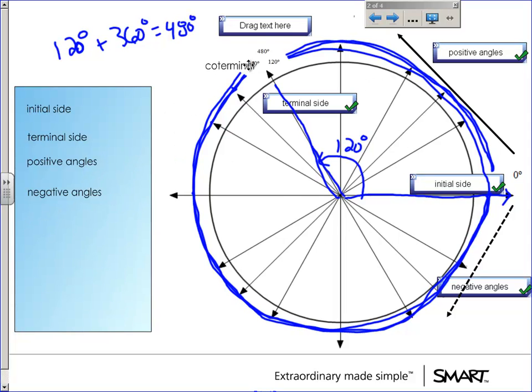So if an angle ends up in the same place but with different names, we're going to call that coterminal angles. So there's a lot of vocabulary we got out of the way.